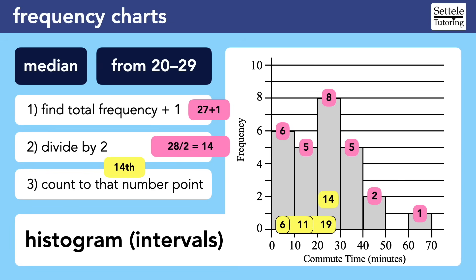We can also count from the right. The last column has just one data value; the next column brings us to 3; then 8; and the tallest column brings us to 16 total data points, meaning we again passed the 14th value in that interval. We don't know the exact median, but we know it could be any number from 20 to 29. If this cumulative method is confusing, you can use the elimination method we used earlier.